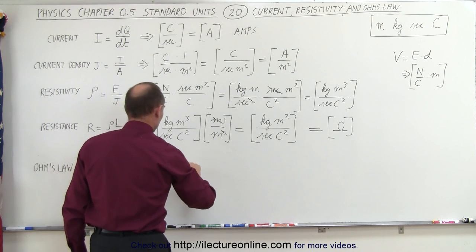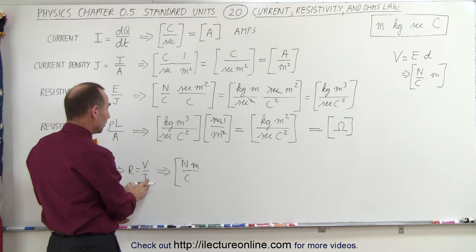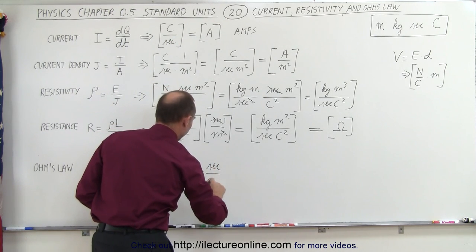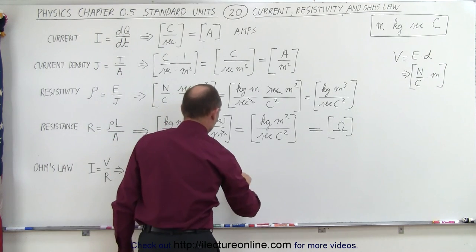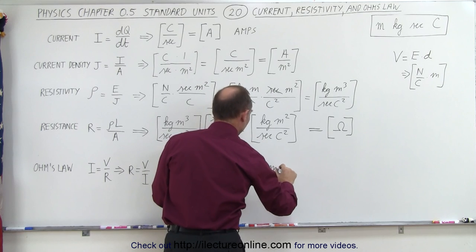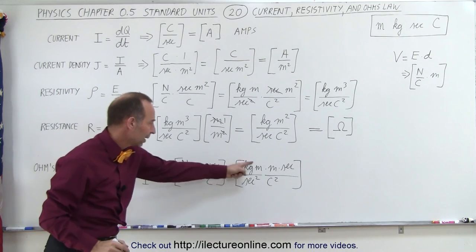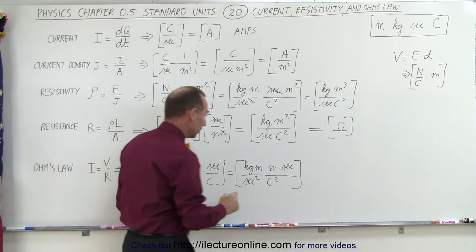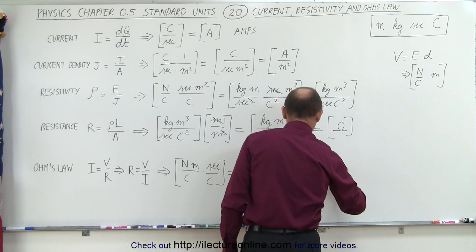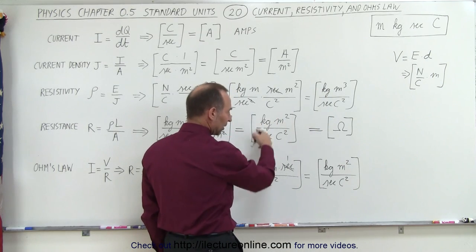Let's see if we get the same results for resistance. Taking voltage — Newton meters per Coulomb — and dividing by the units of current, which is Coulombs per second, we write seconds per Coulomb. Writing out Newtons as kilograms meters per second squared: this becomes kilograms meters per second squared, times meters, times seconds in the numerator, divided by Coulombs squared in the denominator. One second cancels, and we have meters squared in the numerator. This becomes kilograms meters squared per second times Coulombs squared — the exact same result as before.